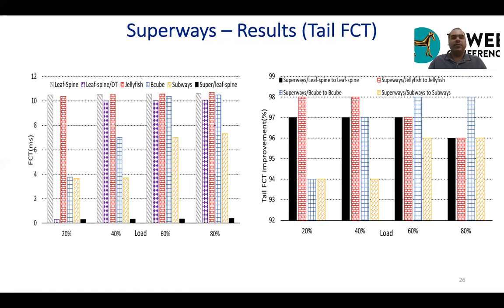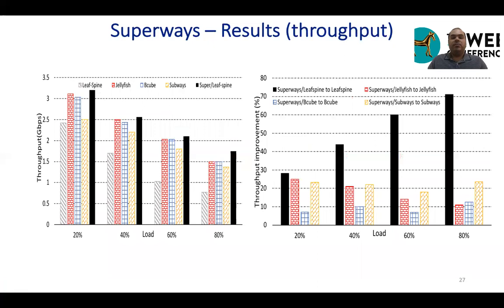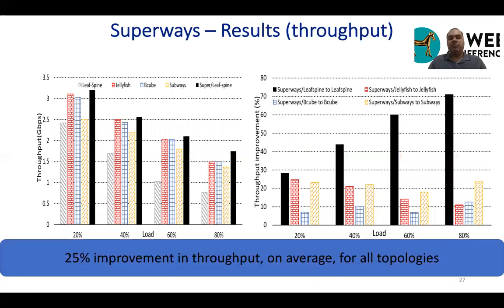Let's talk about the results. For tail flow completion time, we implemented Superways on top of leaf-spine, BCube, Jellyfish, and Subways. The right-hand side figure's y-axis shows the tail FCT and the x-axis shows load as a percentage. We achieve a 95% reduction in tail FCT on average across all topologies, which is a great improvement. We also see about a 25% improvement in throughput on average across all topologies when implementing Superways on top of these topologies.